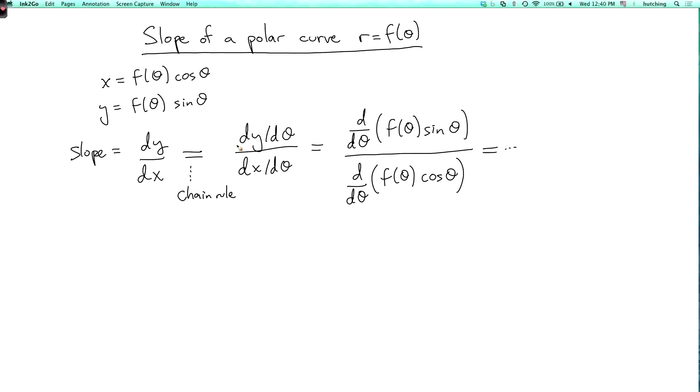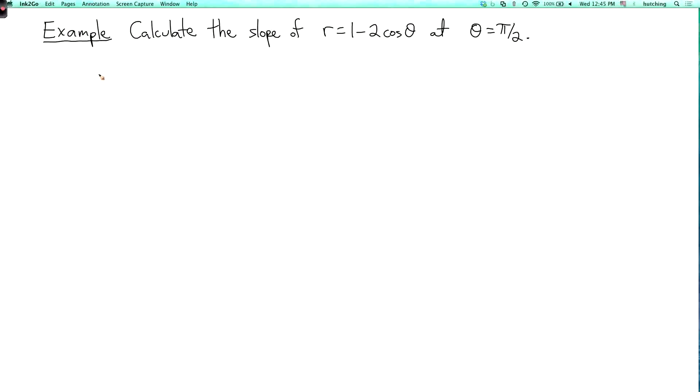Let's do an example. So let's calculate the slope of the curve r equals 1-2cos(θ) at θ = π/2. So let's first write x and y in terms of theta. So x is r, which is (1-2cos(θ))cos(θ), and y equals r·sin(θ). So that's (1-2cos(θ))sin(θ).